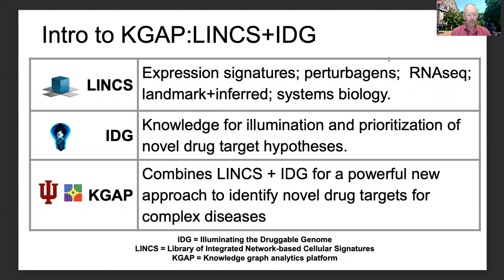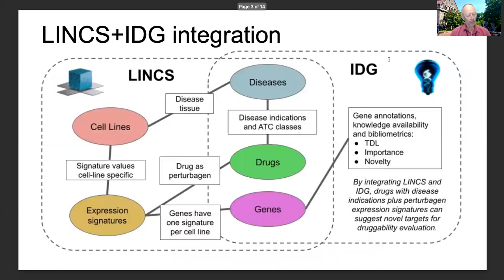We believe that together these resources can support a powerful new approach to identifying novel drug targets for complex diseases. Integrating LINCS and IDG, we built KGAAP — Knowledge Graph Analytics Platform — for identification and prioritization of drug target hypotheses. This open source project was a collaborative effort involving software developers and scientists. This schematic diagram illustrates the integrated knowledge graph and logic.